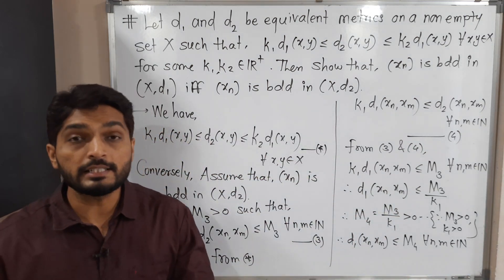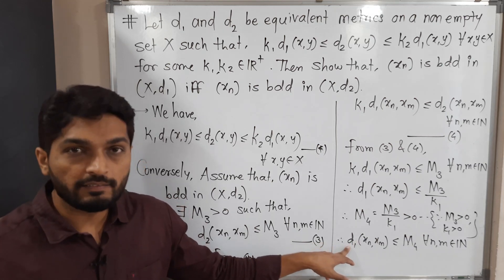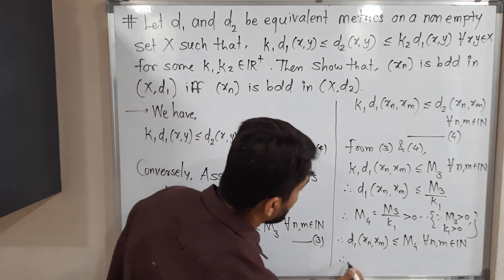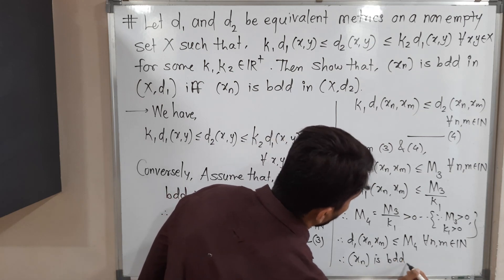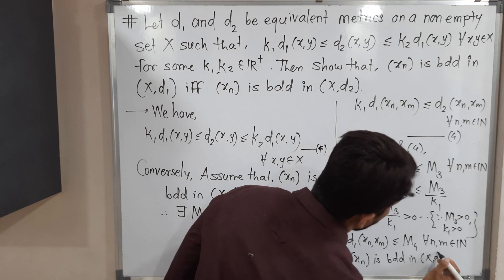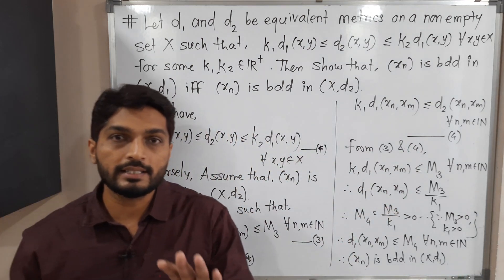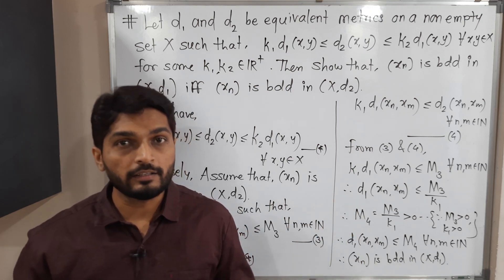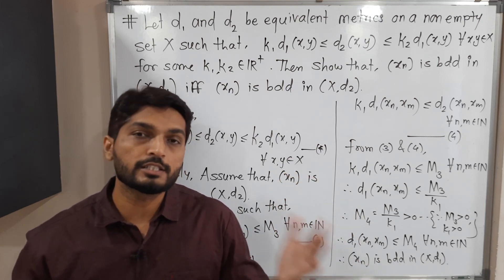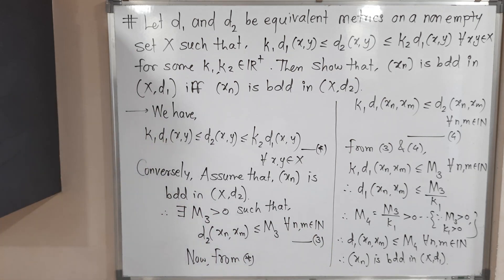Therefore d1(xn, xm) ≤ m4 for all n, m belonging to the set of natural numbers. This is the definition of a bounded sequence, and since d1 is used, the sequence xn is bounded in (X, d1). In this way we proved: if the sequence is bounded in (X, d1) it is bounded in (X, d2), and if it is bounded in (X, d2) it is bounded in (X, d1). The proof is complete.